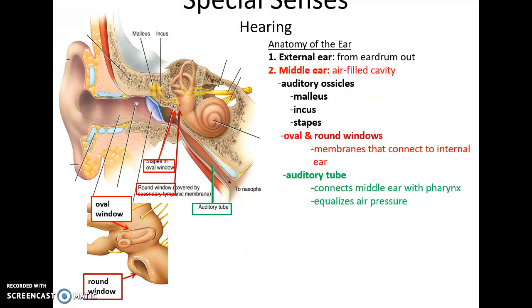You also have the oval window, which leads into the internal ear, as well as below that, a round window. The round window is also a membrane structure, usually transmitting vibrations out of the inner ear. Also found in the middle ear is the auditory tube, which connects the middle ear to the pharynx — the back of the throat. This allows air pressure in the middle ear to equalize with the pressure outside. If this equalization doesn't happen, a change in pressure would dampen the vibration of the tympanic membrane and make it harder to hear. You can feel this occurring when flying in a plane — your ears popping is the equalization of pressure in the middle ear.